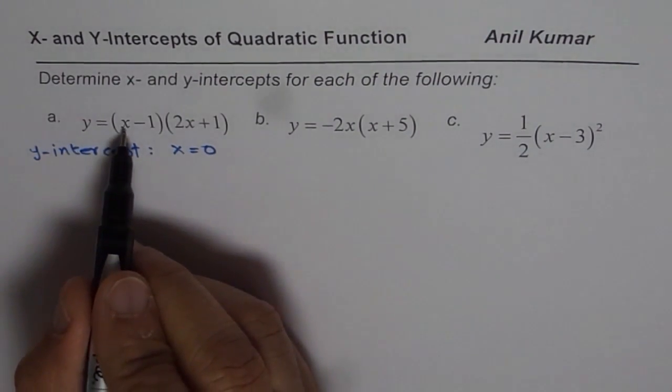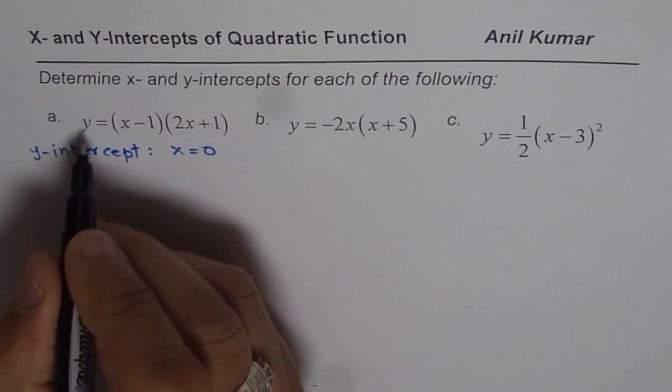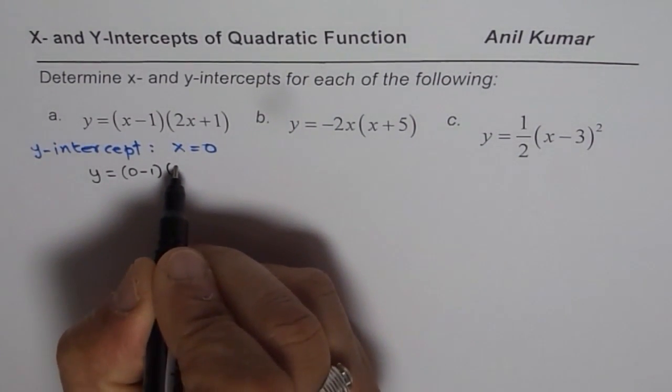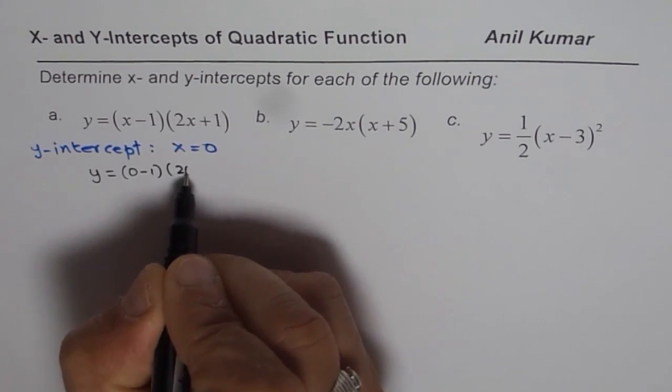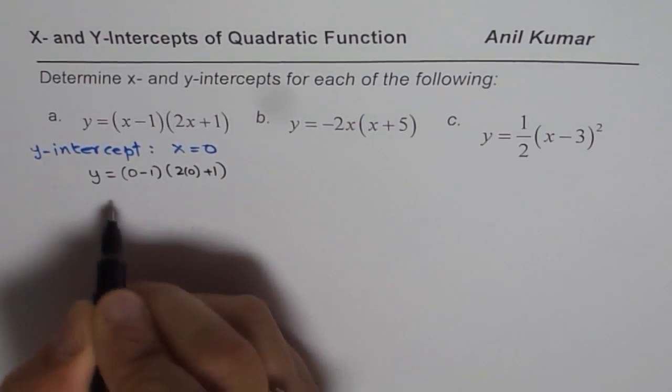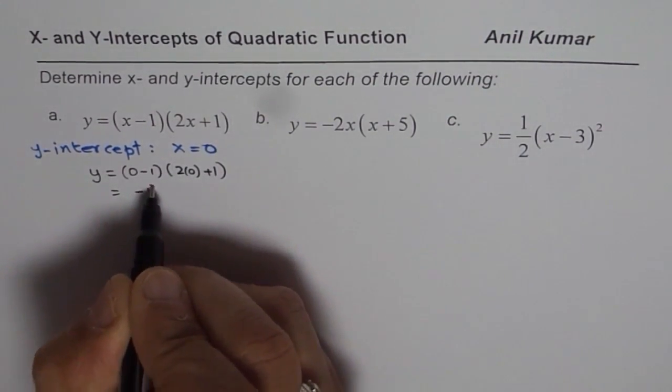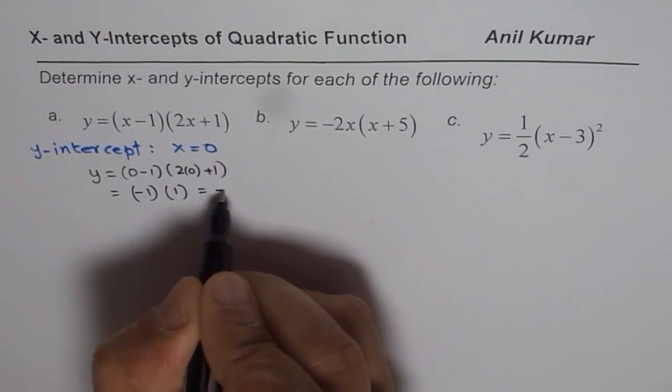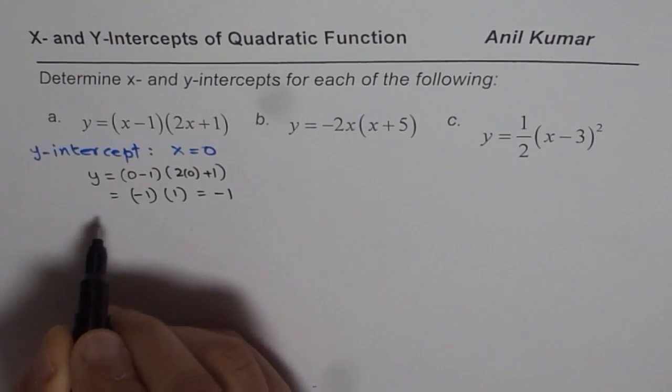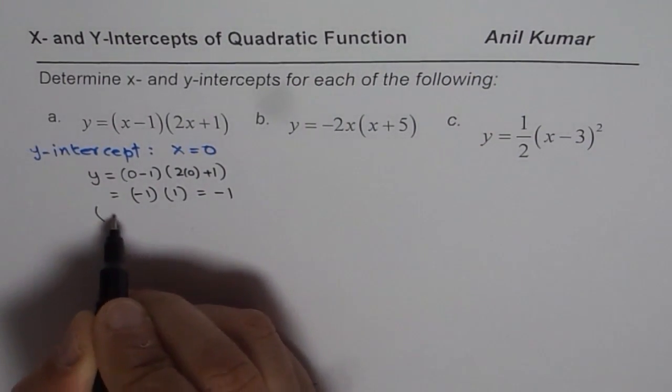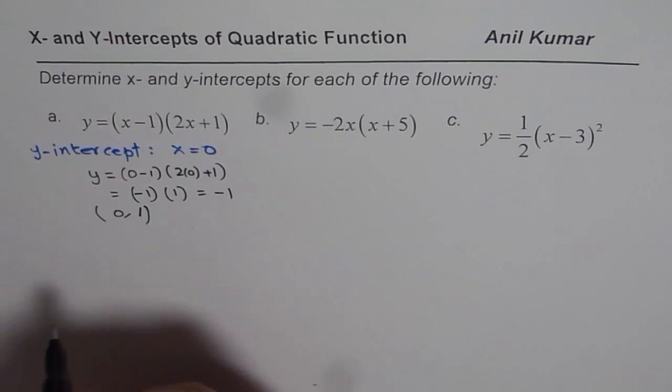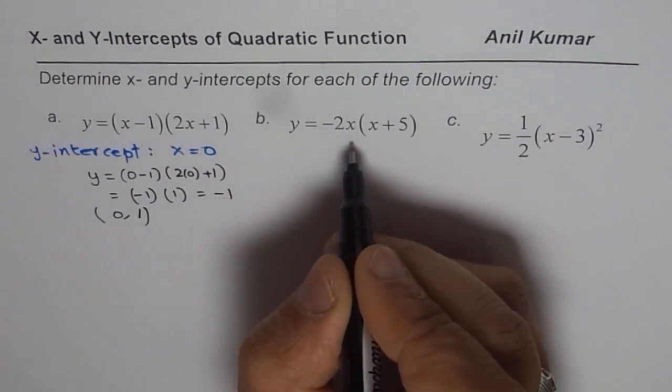So let us substitute x equals to 0 and find y-intercept. For the first one, we get y equals to 0 minus 1 times, anything times 0 will be 0. So that gives us minus 1 times 1. That is indeed minus 1. So the y-intercept here is 0 minus 1, that is the coordinate point.